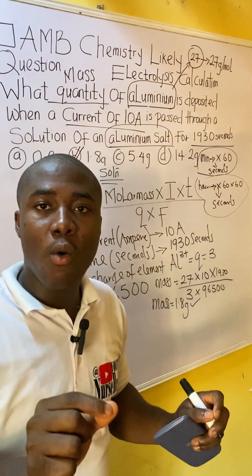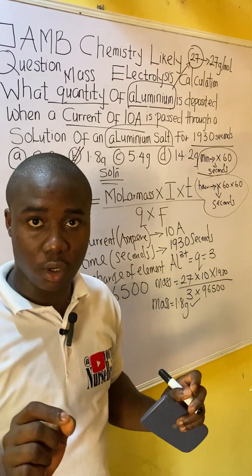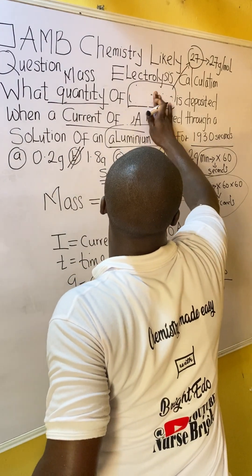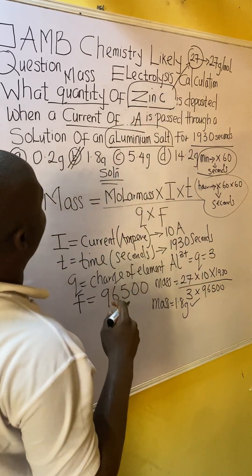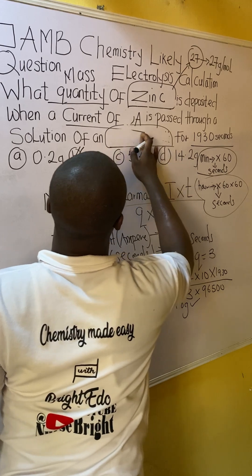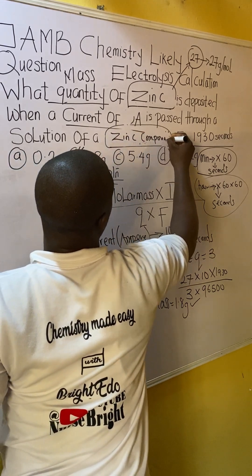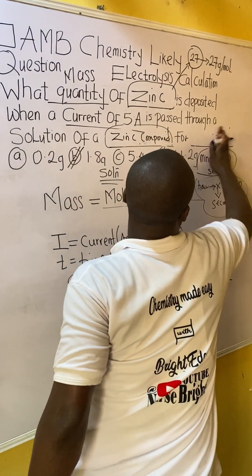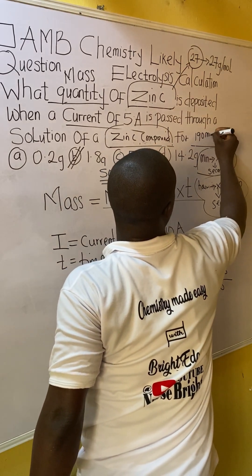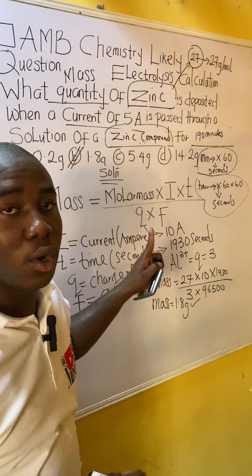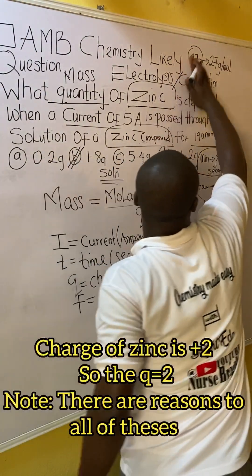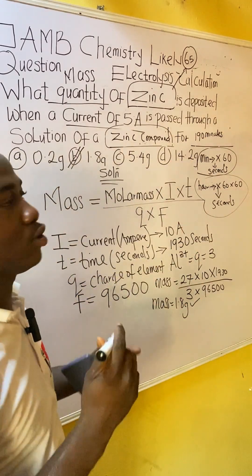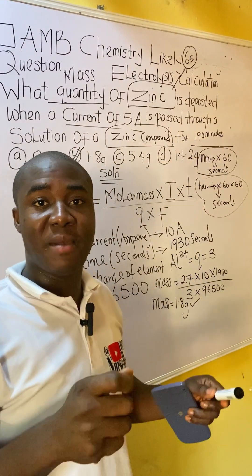You can see how questions under this aspect are solved — without stress, not difficult. Now get ready for your own practice question. The element is changed to zinc, in a solution of a zinc compound, the current is changed to 5 amperes, and the time is 119 minutes. Make sure you convert the minutes to seconds. The atomic mass of zinc is 65, not 27. Solve it and provide your answer in the comment section.